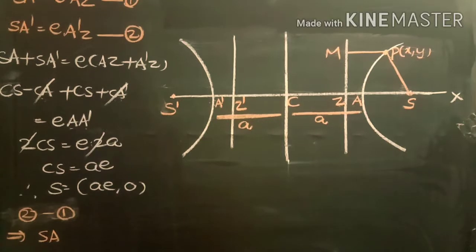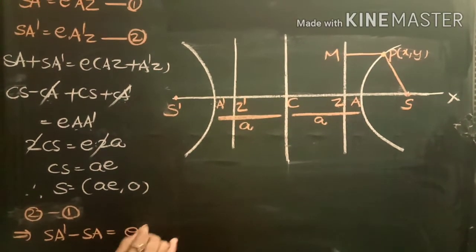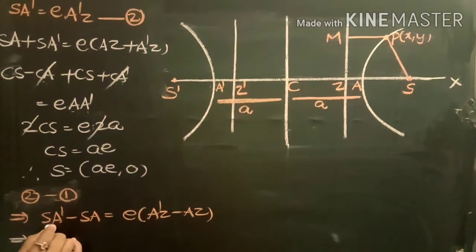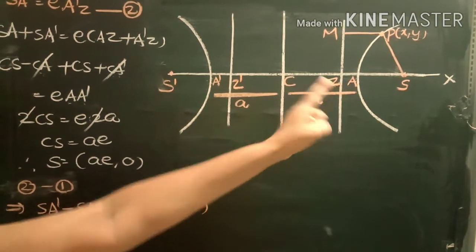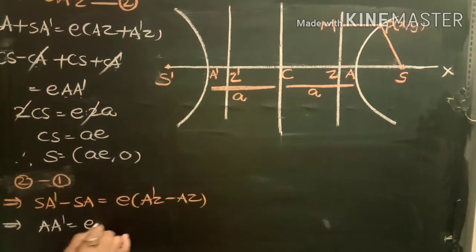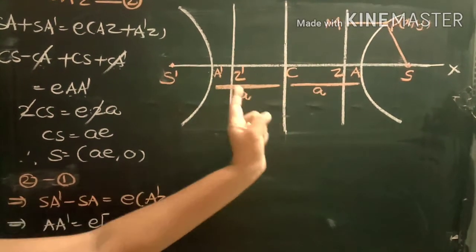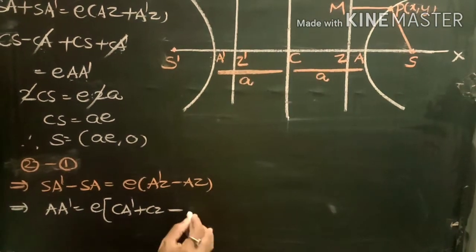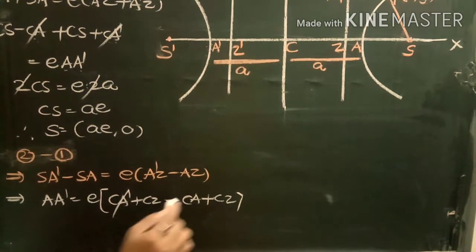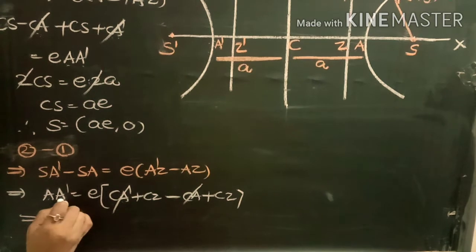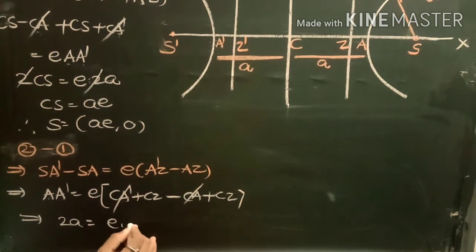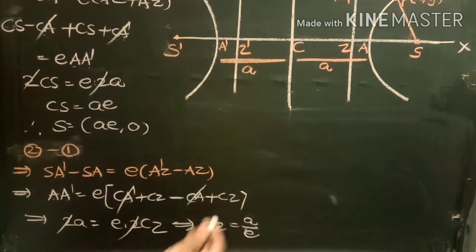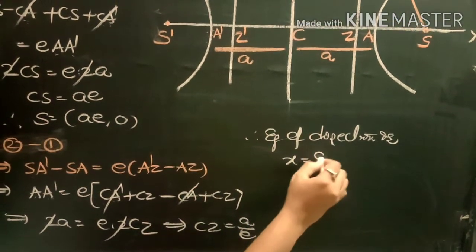Subtracting equation 1 from equation 2: SA dash minus SA equals e times (A dash Z minus AZ), which equals 2a. Expanding A dash Z and AZ in terms of CA dash, CA, and CZ, the CA terms cancel, giving 2a equals e times 2CZ. Therefore CZ equals a divided by e, and the equation of the directrix is x equals a over e.